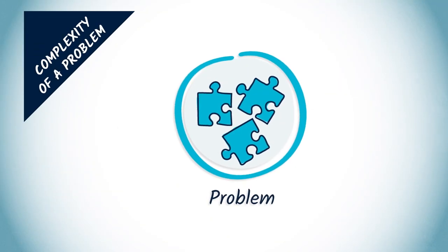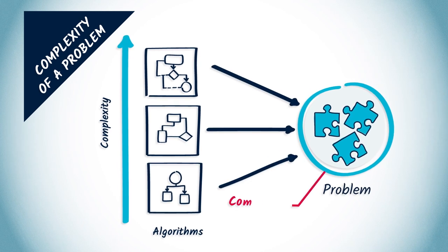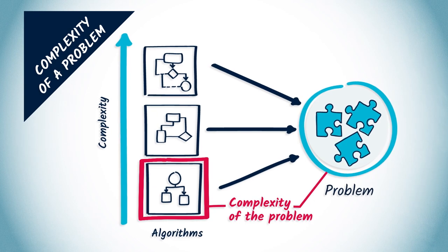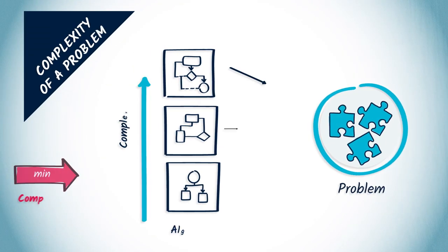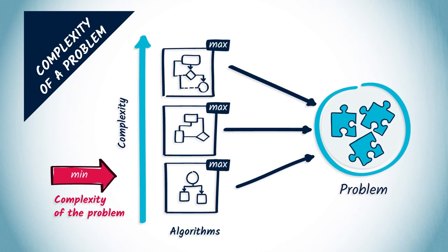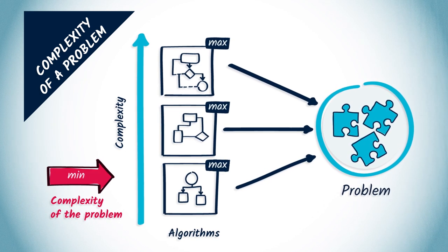The complexity of a problem is related to the complexity of algorithms. The complexity of a problem is defined as the minimum complexity of the algorithms solving the problem. As we saw last week, the complexity of an algorithm includes a connotation of worst-case because it measures the maximum number of elementary operations needed for its execution. Consequently, the complexity of a problem — intuitively the complexity of the best possible algorithm that can solve it — can be seen as a minimum of a maximum.